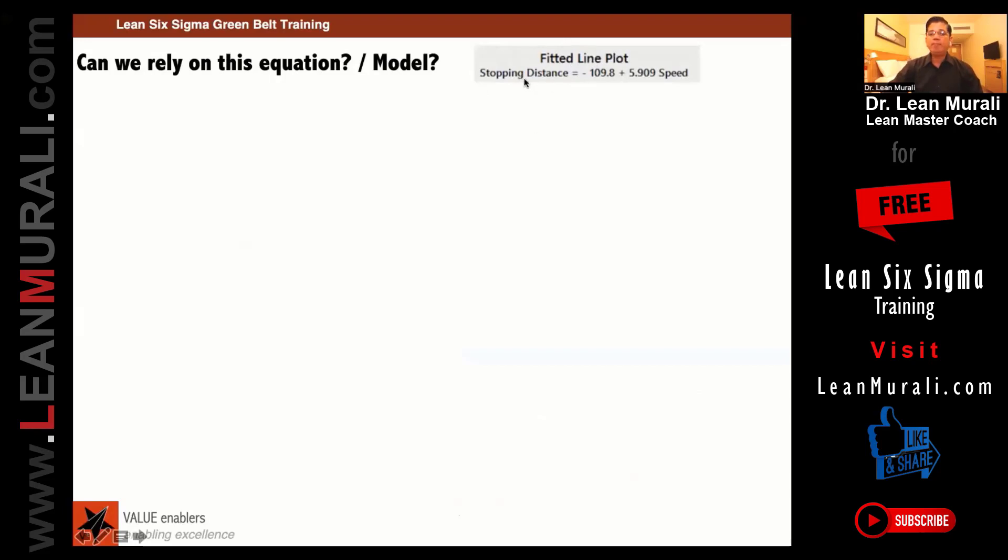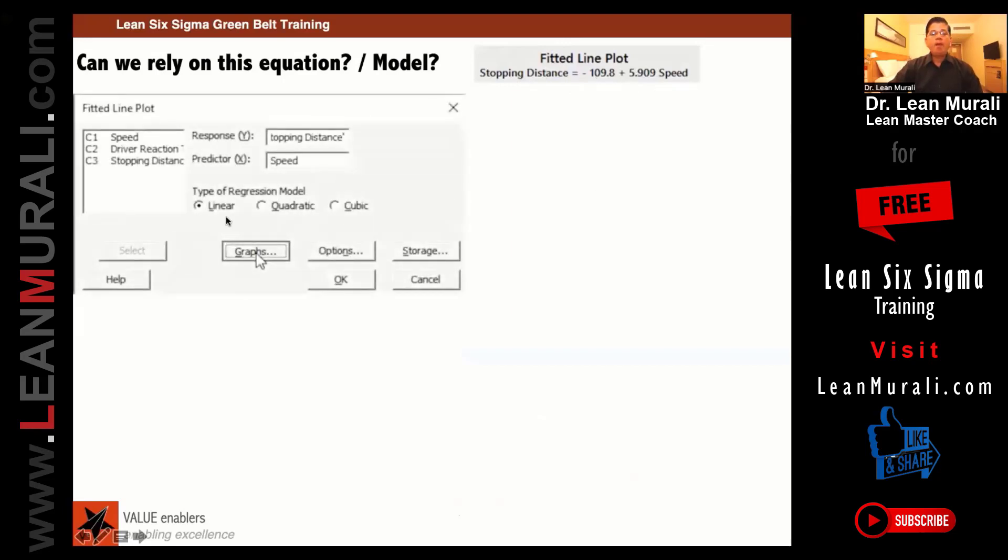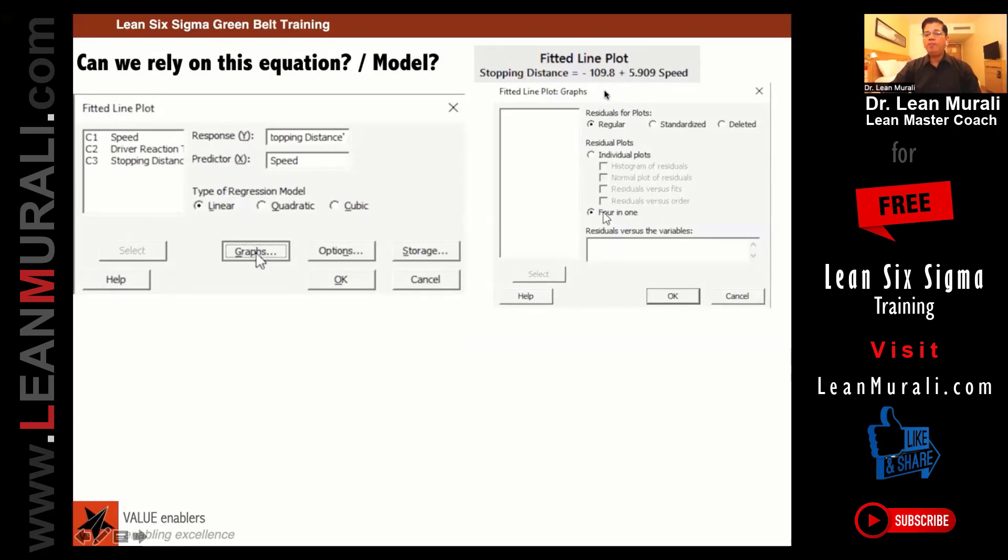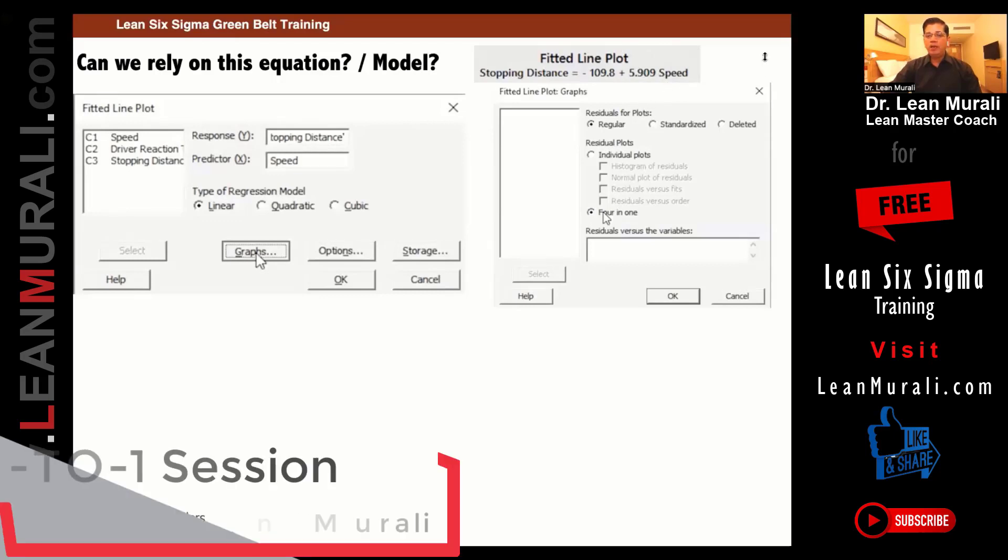So you had this fitted line plot and there is a stopping distance equation. Now if you choose the graph here and 4 in 1, I am going to explain to you some deep stuff which generally are not taught. 109.8 is a constant. This is what is there that Y is equal to MX plus C. M is a slope. So here, this 5.909 is a slope and we love to go back to colleges or schools to understand what is the constant.